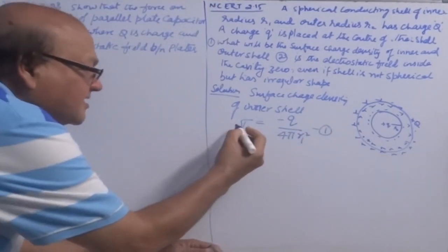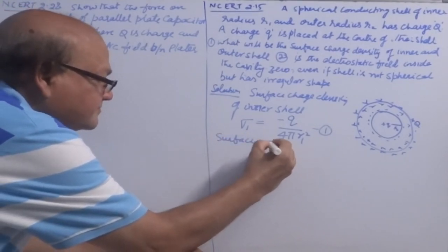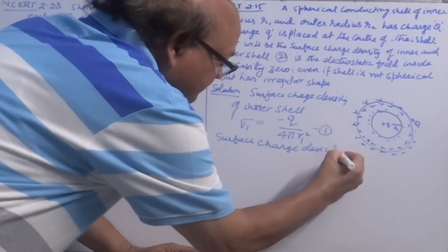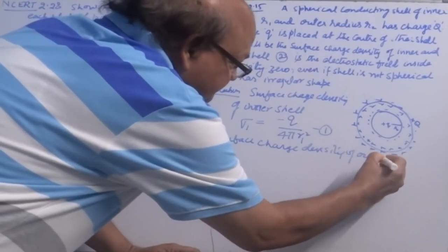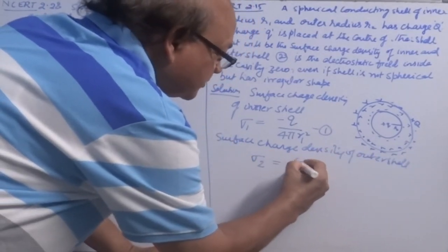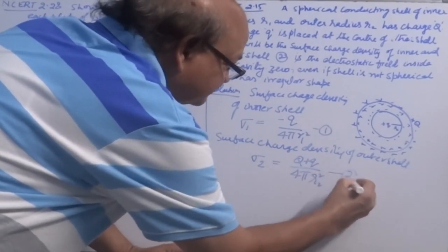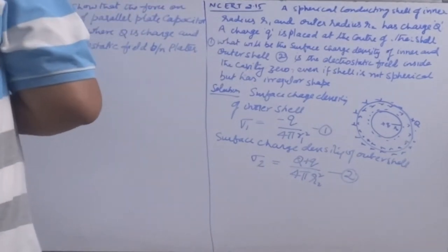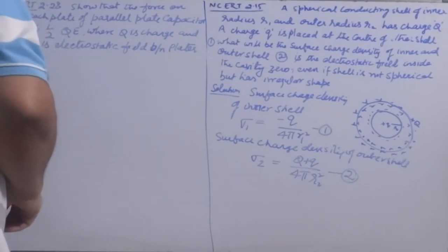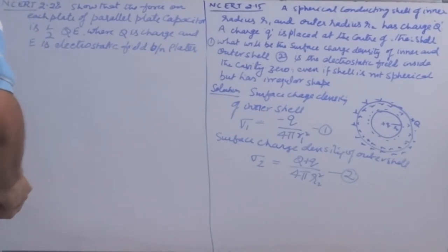The surface charge density of the outer surface: sigma₂ = (Q + q) / (4πR2²), because the shell carries charge Q and the induced positive charge q both reside on the outer surface.